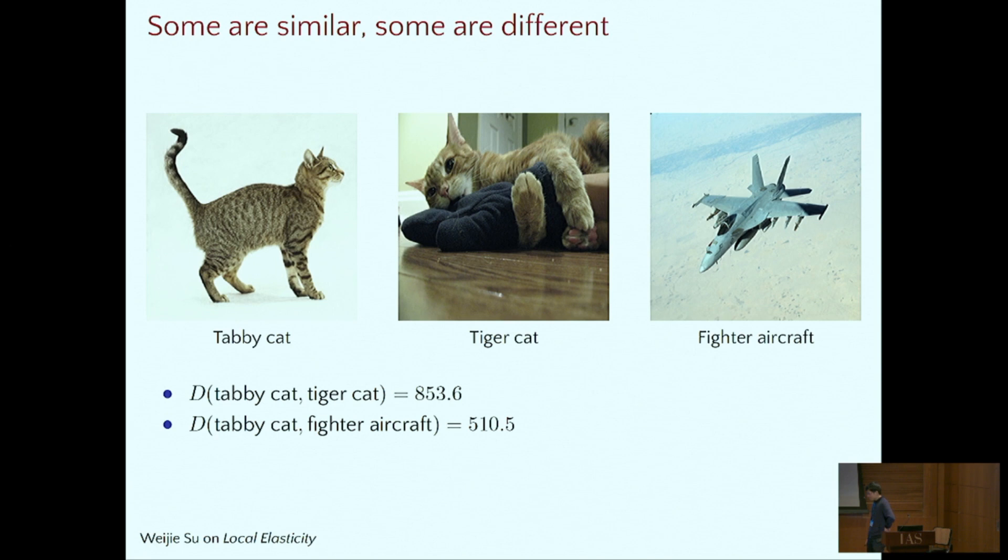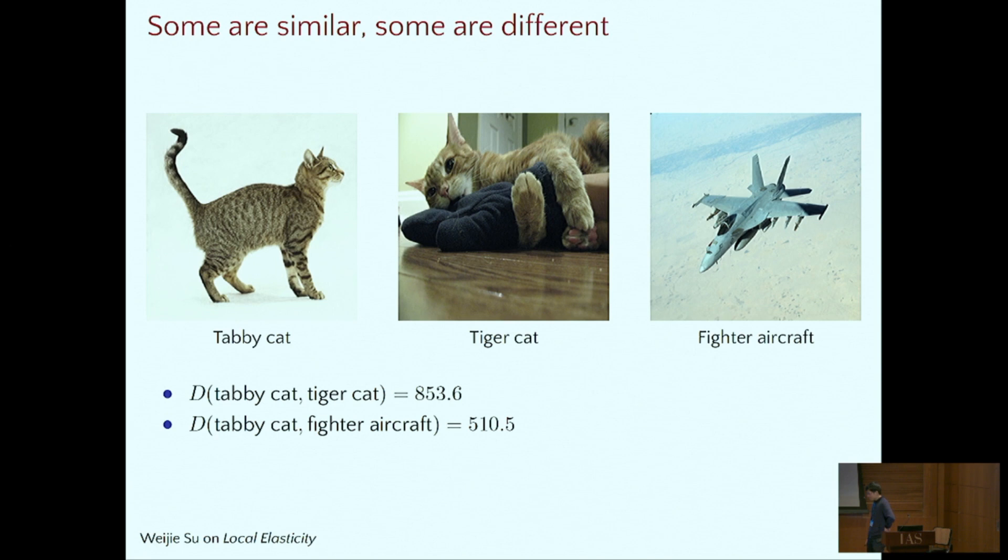So there are three different classes in ImageNet, but certainly the two classes are very similar to human beings. Our question is: can neural networks automatically distinguish, tell that these two images are similar and they are different from the last one? This is not trivial, because in terms of Euclidean distance, the two cats are even far away. So this is our question.